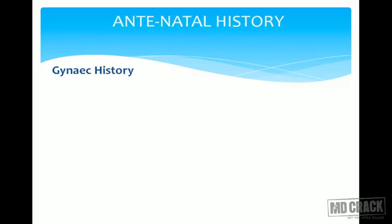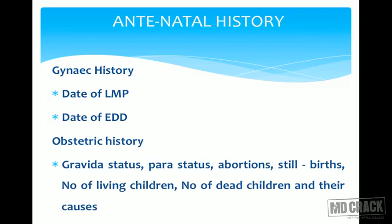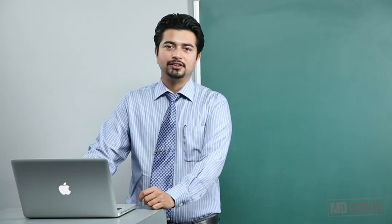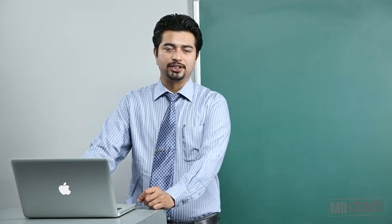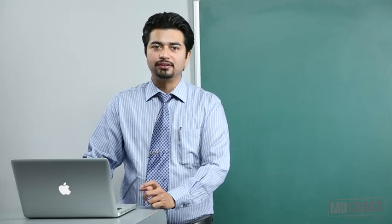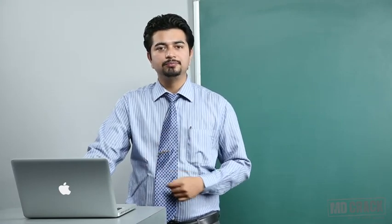For antenatal history, the date of LMP (last menstrual period) should be recorded and the EDD (expected date of delivery) calculated using the formula: LMP plus 9 months and 7 days. Obstetric history should include gravida status, para status, abortions, history of stillbirth, number of living and dead children and their causes. If a mother has a previous bad obstetric history or multiple abortions, noting the trimester of abortions is important to prevent complications in the current pregnancy.